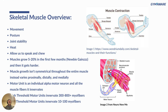Skeletal muscle is also used for posture — that's what keeps us upright, in conjunction with the skeletal system. It provides joint stability and generates heat; when we shiver, that's the body's way of warming up. It also allows us to speak and chew — if we didn't have muscle, we could not chew our food or speak.